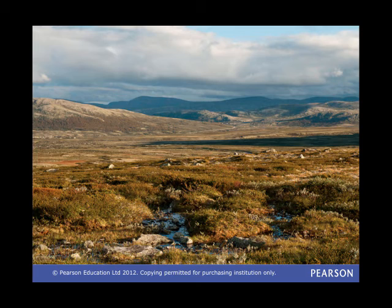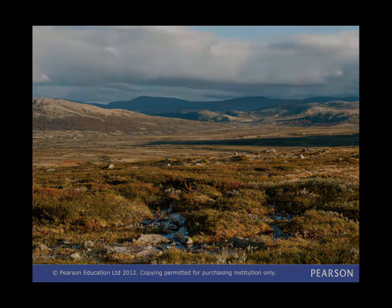In summer, the top level of the soil unfreezes, but the permafrost doesn't. The meltwater has nowhere to go, so the landscape is very marshy and boggy.